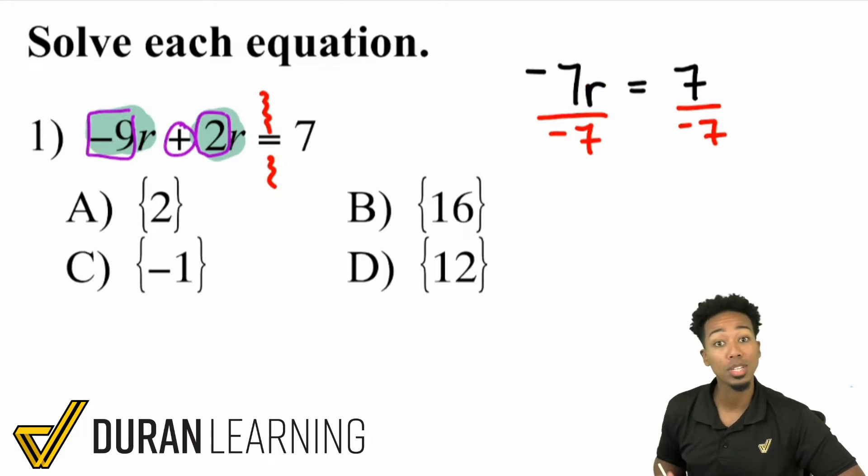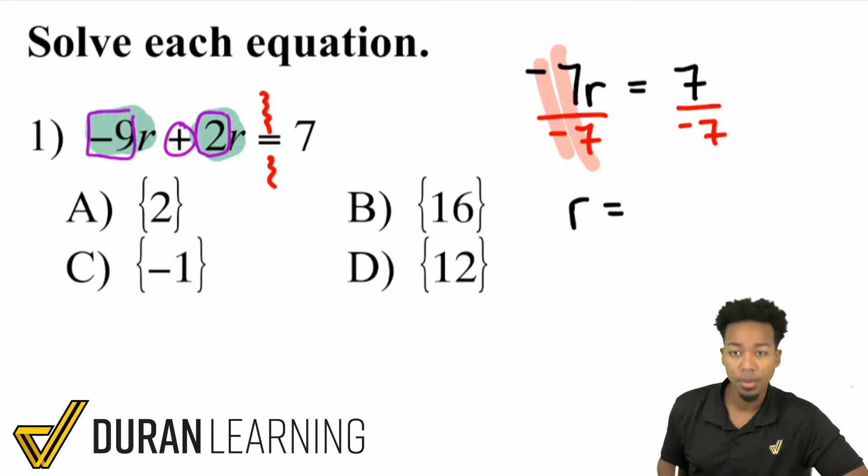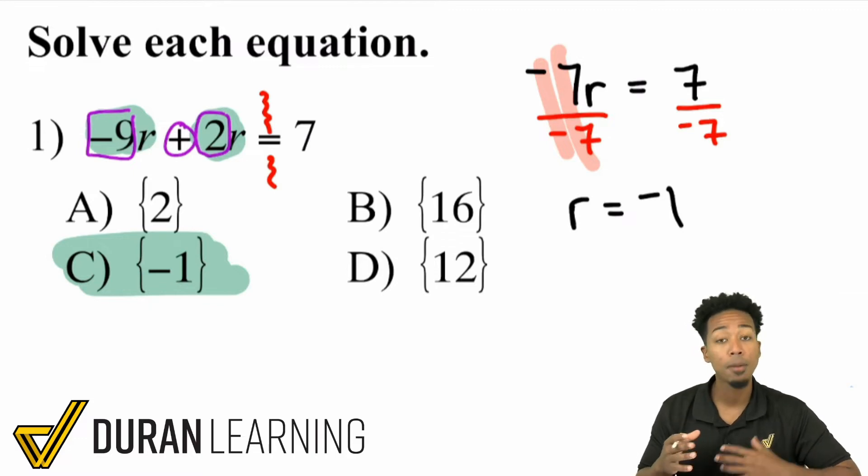And so by doing that, we're going to have ourselves negative 7 divided by negative 7, which cancels out. And then we have ourselves r equals, all right, 7 divided by 7 is 1. And then a positive divided by a negative, that's going to be negative. And so the answer here is negative 1. But we're not done here. Let's go ahead and go through a few more examples here to show you again where you have to combine like terms before you can actually solve.